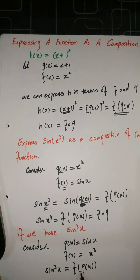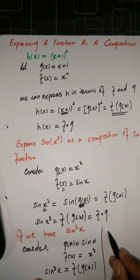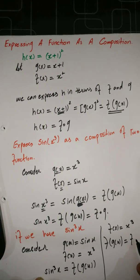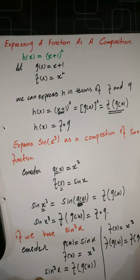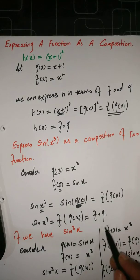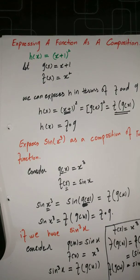Whenever we solve f(g(x)): f(x) = x³, and when we replace x by g(x) it becomes g(x)³. Since g(x) = sin(x), we get sin(x)³ = sin³(x). So that is the way to write a function as a decomposition. Whenever we have to write a function in composition form, we follow these steps — they are very easy to understand.